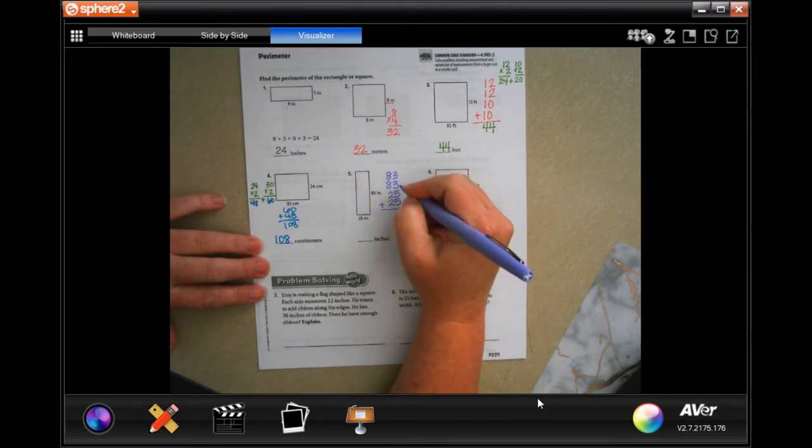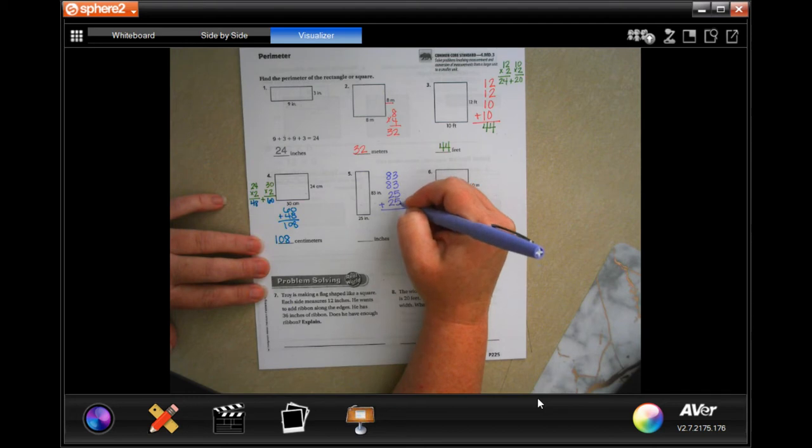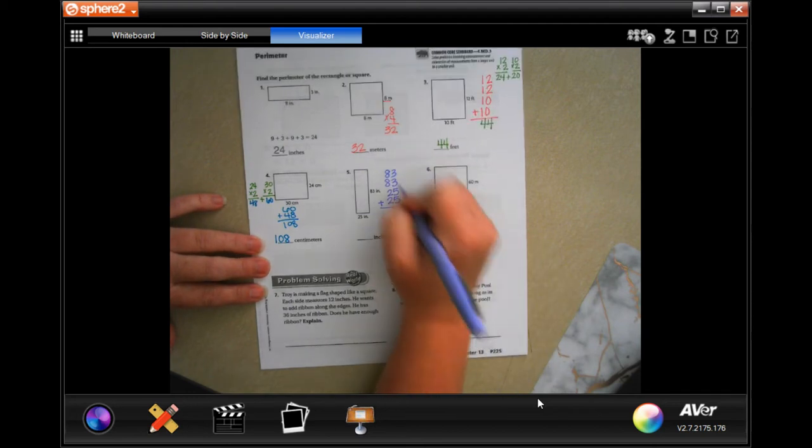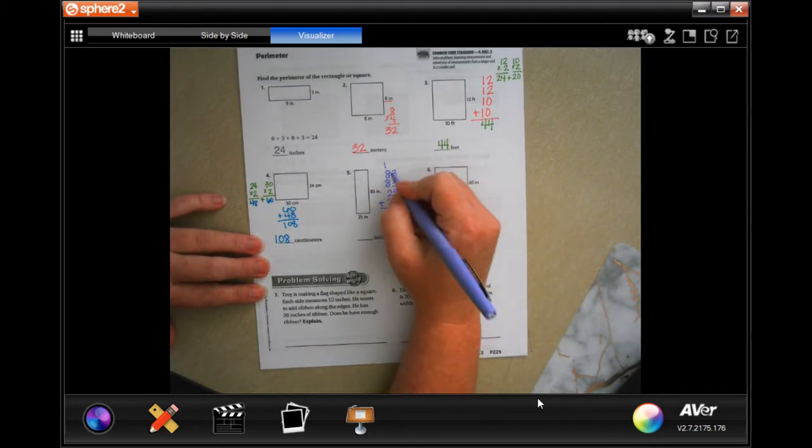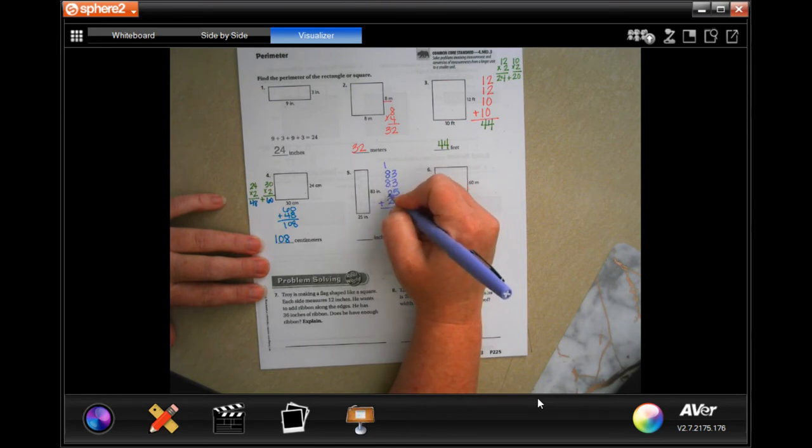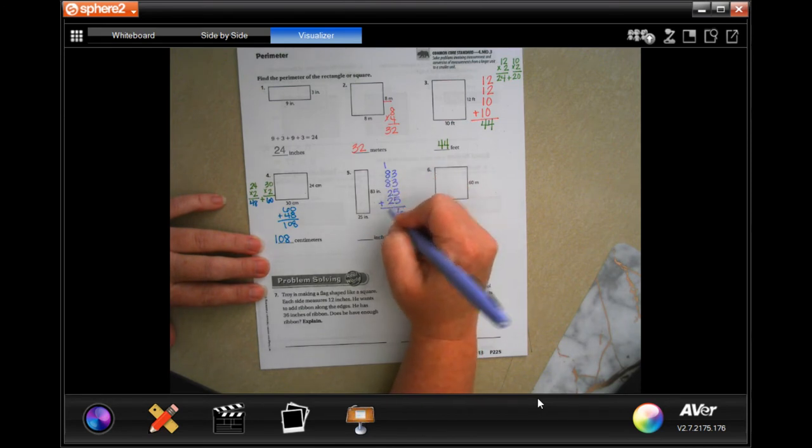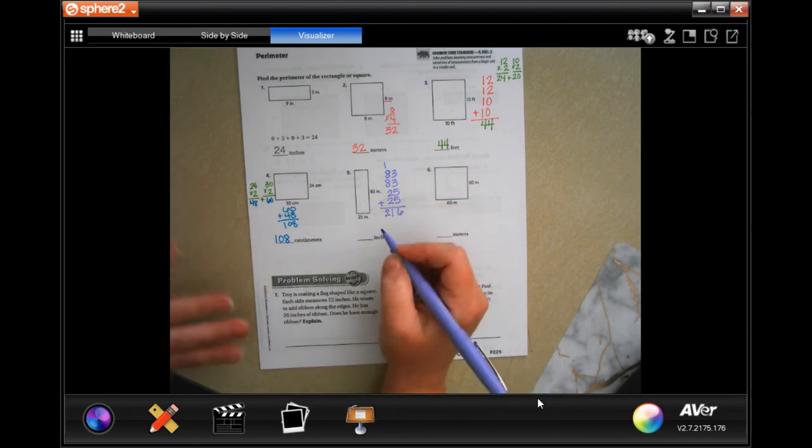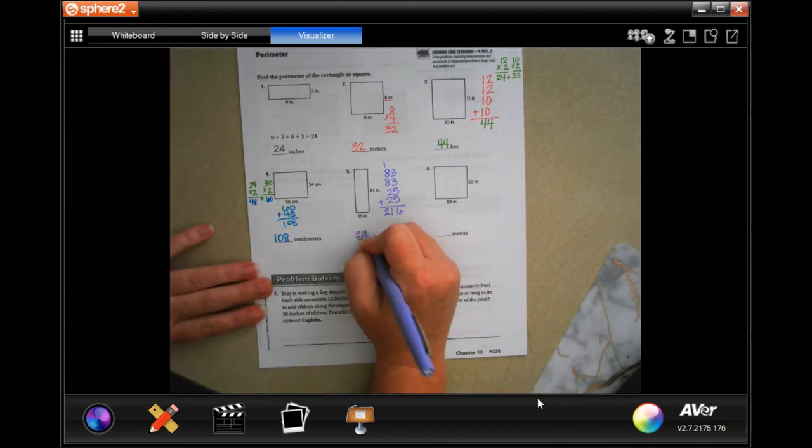3 plus 3 is 6, plus 5 is 11, plus 5 is 16. Here we are, 1. 1 plus 8 is 9, plus 8 more is 17, plus 2 is 19, plus 2 is 21. 216 inches.